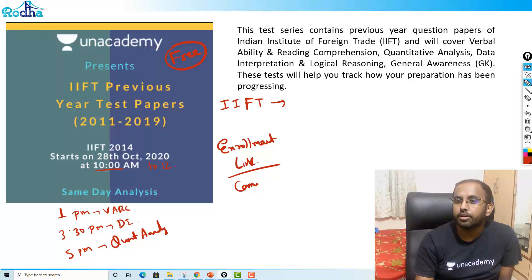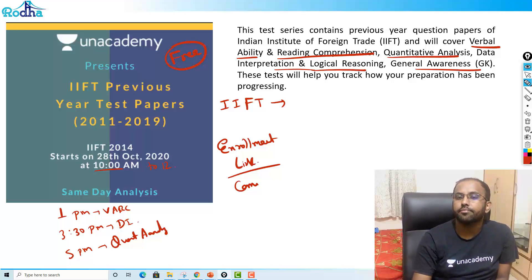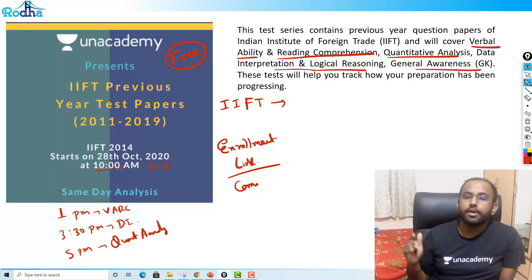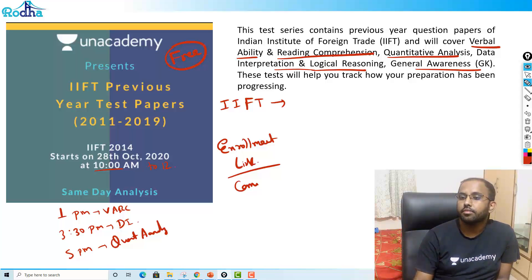It will consist of all the sections of verbal ability, reading comprehension, QA, and DI and LR, everything and GK. So enroll to that part. We will move to next question. Make full use of this guys, because if you are giving CAT, 99.9% of people giving CAT gives IFT, NMAT, SNAP. So we have everything, all these classes and preparations going in Unacademy with mocks format, previous format. Make full use of it and that's all free of cost.